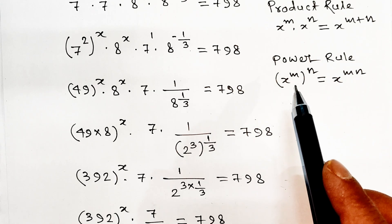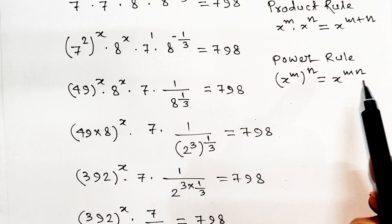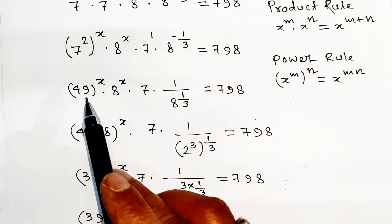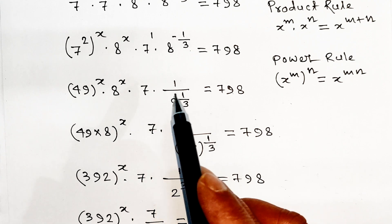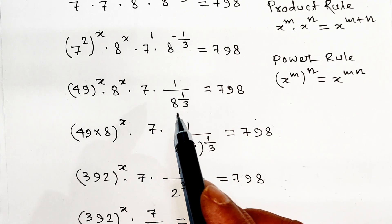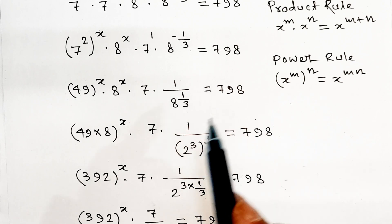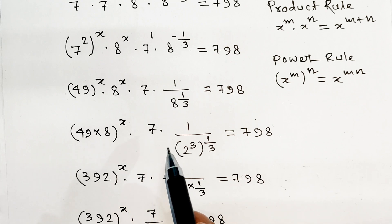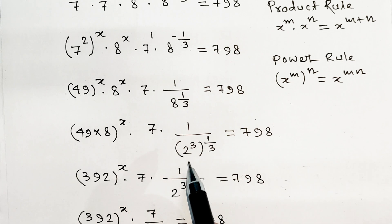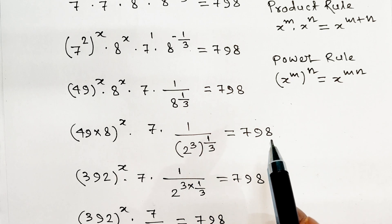Power rule: x to the power m to the power n equals x to the power mn. Applying this: 7 squared to the power x into 8 to the power x, into 7, into 1 divided by 8 to the power 1 divided by 3, equals 7.98. Since 2 to the power 3 to the power 1 divided by 3 equals 2.